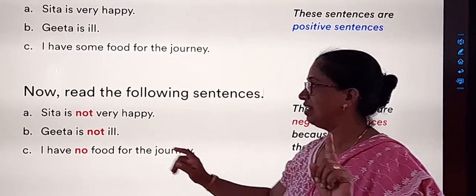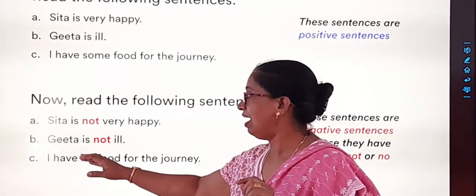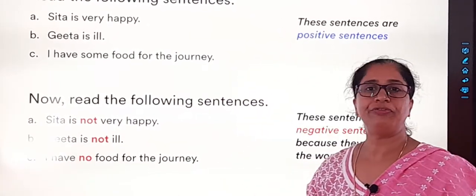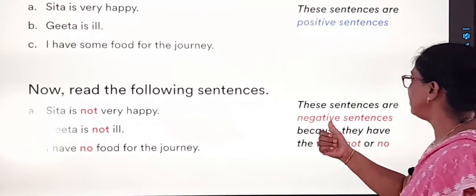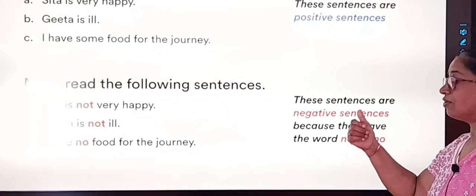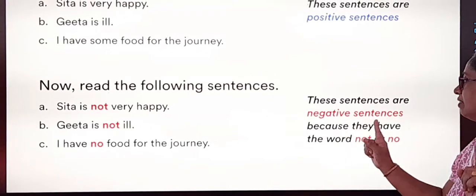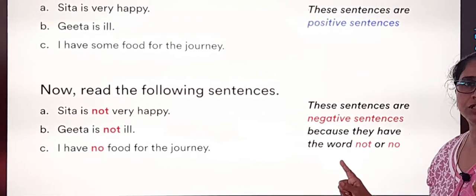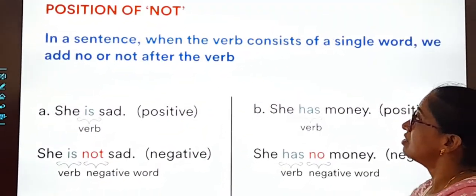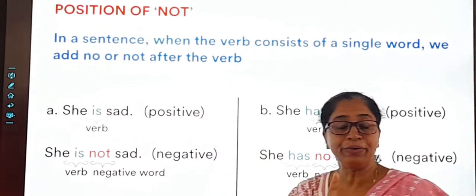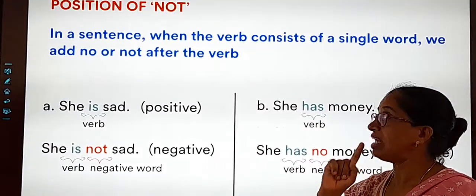Read these negative sentences: Sita is not very happy. Gita is not ill. I have no food for the journey. We put in the negative words and it becomes a negative sentence — because they have the words 'not' and 'no'. Now let's pay attention to the position of 'not'.